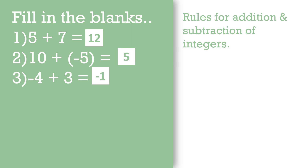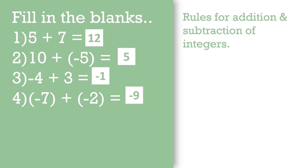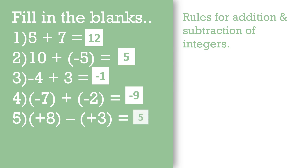Next, -7 + (-2): let's open the bracket first. Plus and minus becomes minus; minus and minus becomes plus. So here 7 + 2 = 9, and we give a minus sign because 7 is the greater number and 7 has a minus sign. So the answer is -9. Next, +8 - (-3): opening the second bracket, minus and minus becomes plus, so 8 + 3... wait — 8 - 3 = 5, positive 5, because 8 is the greater number and 8 has a positive sign.